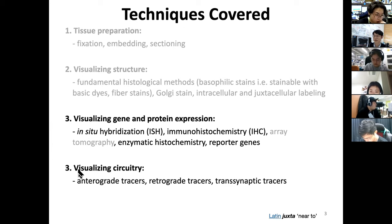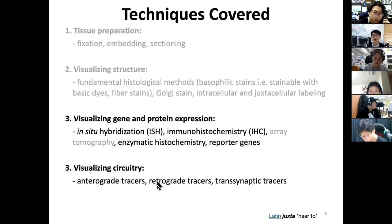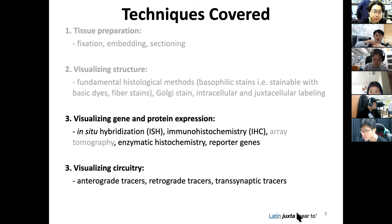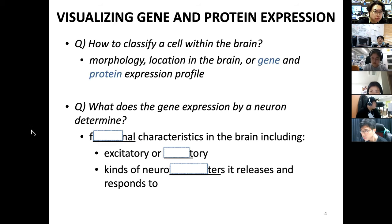We will also be discussing visualizing circuitry — the concept of anterograde and retrograde tracers, and trans-synaptic tracers. One terminology I used last time was juxtacellular labeling. Juxta actually means 'near to,' so the probe is at or near to the cell, almost touching the cell.